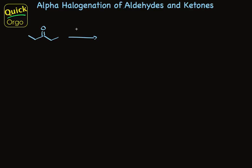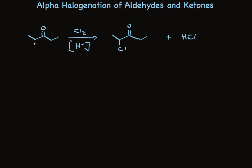Treatment of a ketone or aldehyde with chlorine, often together with acid, places the chlorine at the alpha carbon. HCl is a byproduct. As a quick reminder, in common nomenclature, the carbon next to the carbonyl is called alpha. Acid acts as a catalyst, and because acid is made as a byproduct, you increase the concentration of catalyst as the reaction proceeds. This is a type of process called autocatalytic.